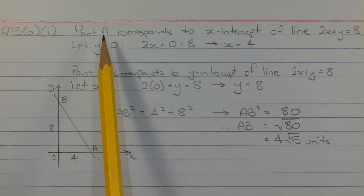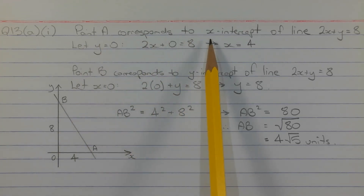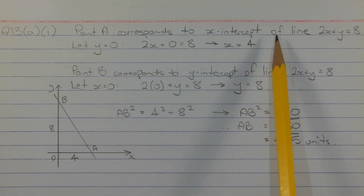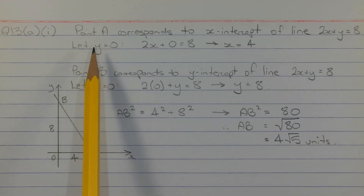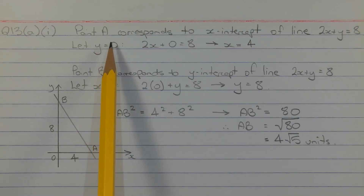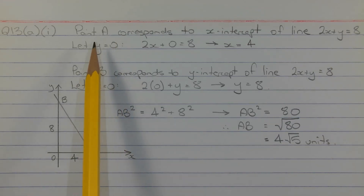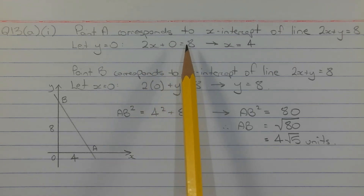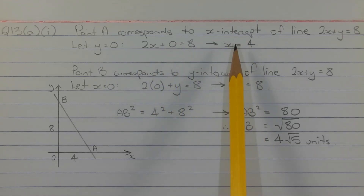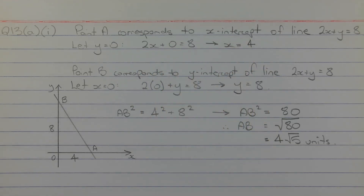Point A, that's this point here, corresponds to the x-intercept of the line 2x plus y equals 8. So to find the x-intercept we let y equals 0, since the y-coordinate of point A is 0. So 2x plus 0 equals 8, which gives us x equals 4 as a solution.